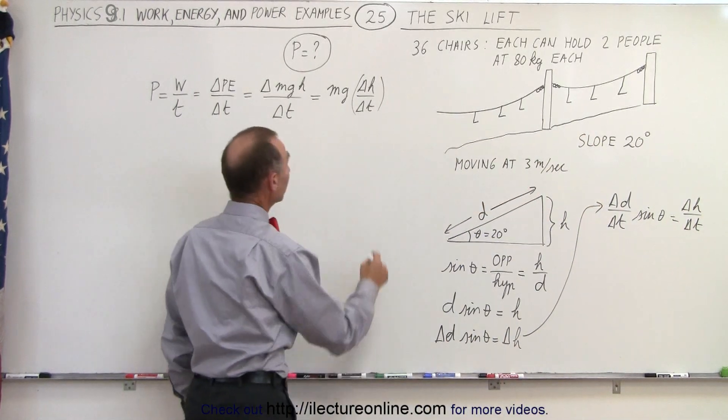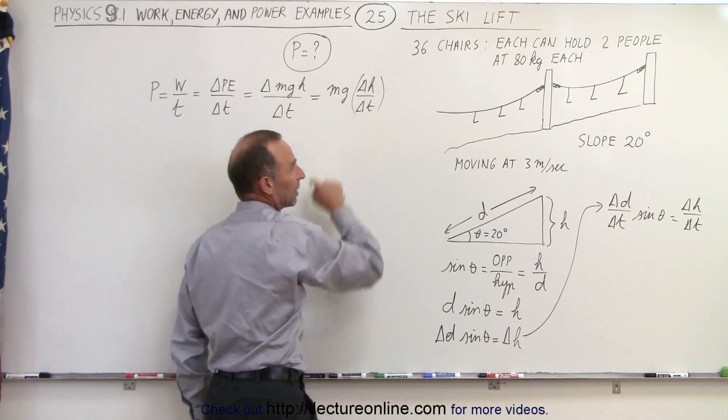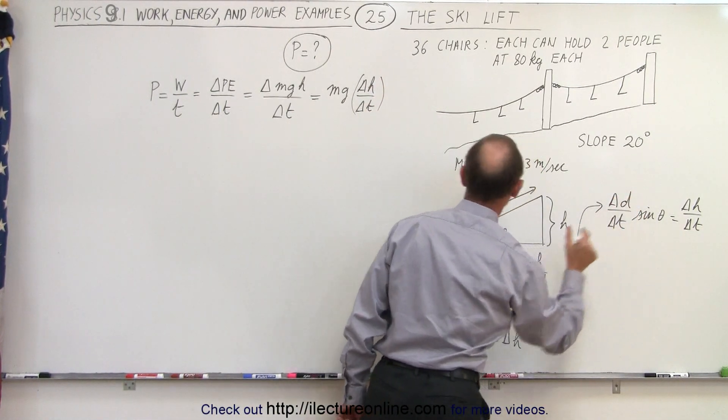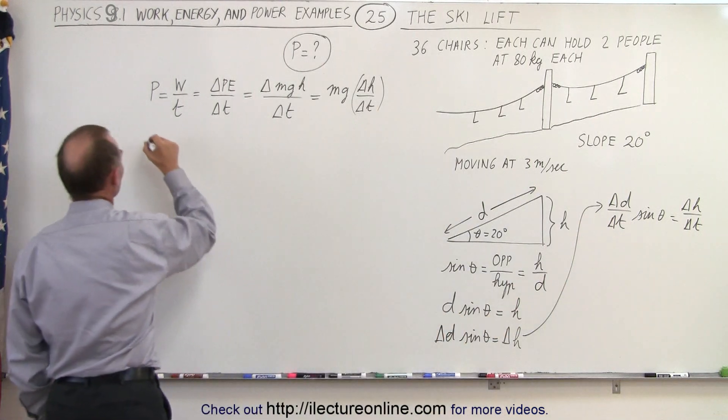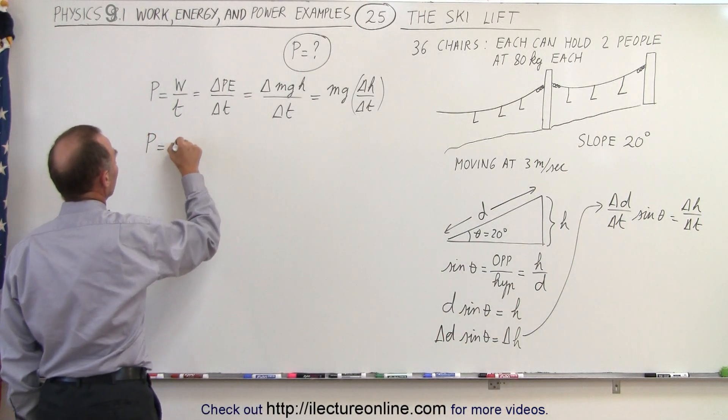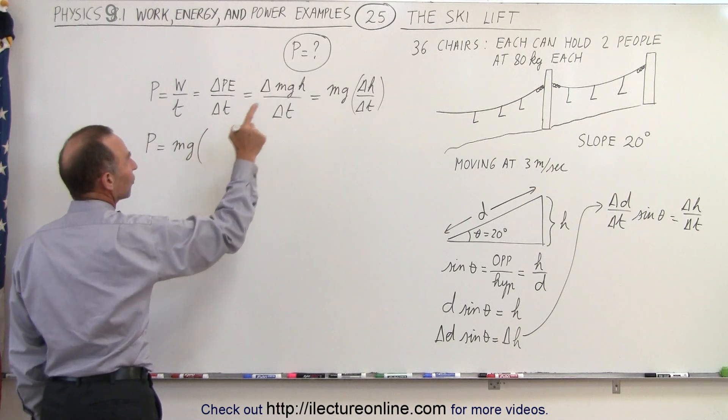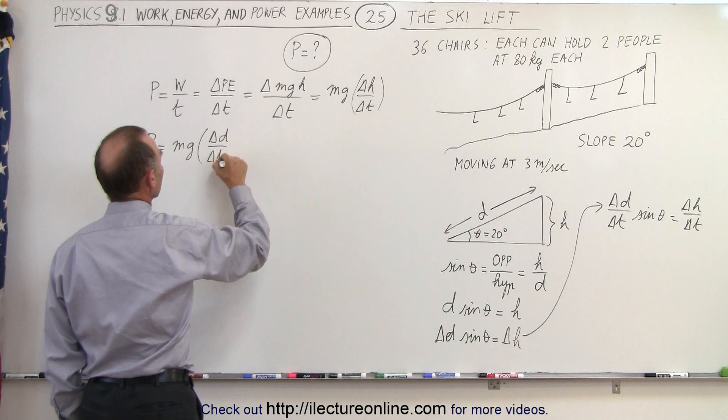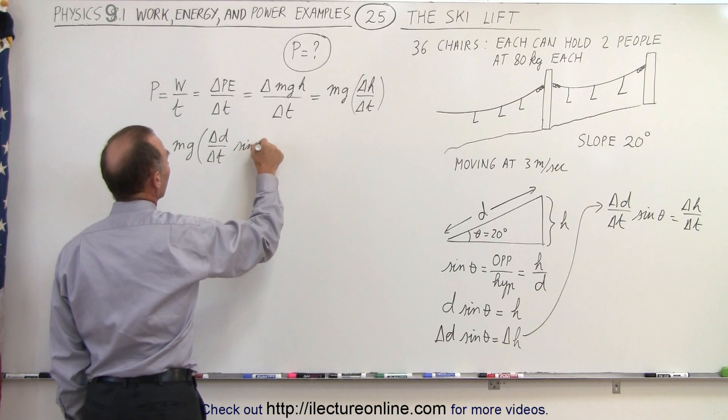So now coming back over here, delta H divided by delta T can be written as the sine of theta times delta D divided by delta T. So let's make that change. So the power needed is going to be equal to mg, and instead of delta H over delta T, we write delta D over delta T times the sine of theta.